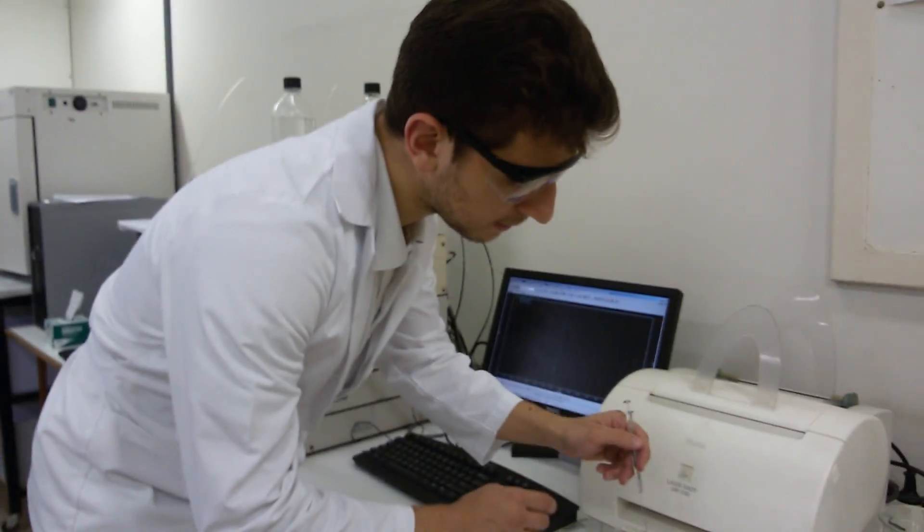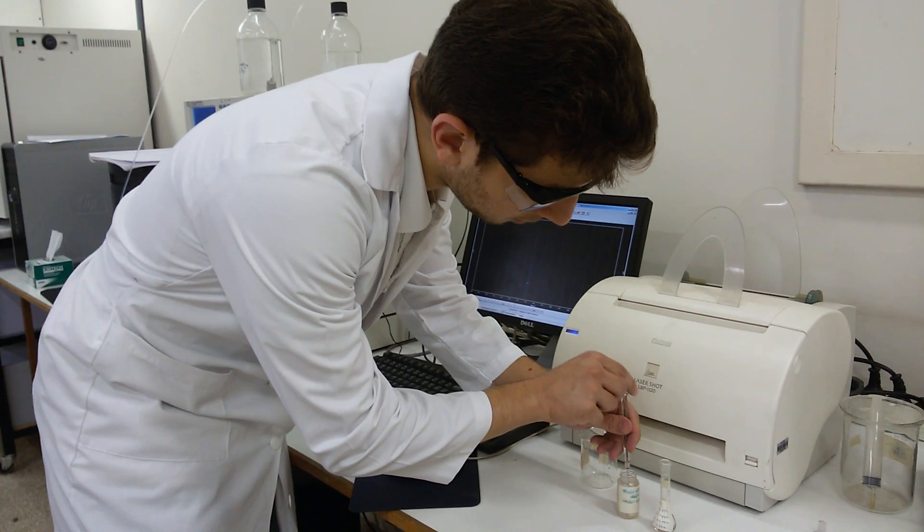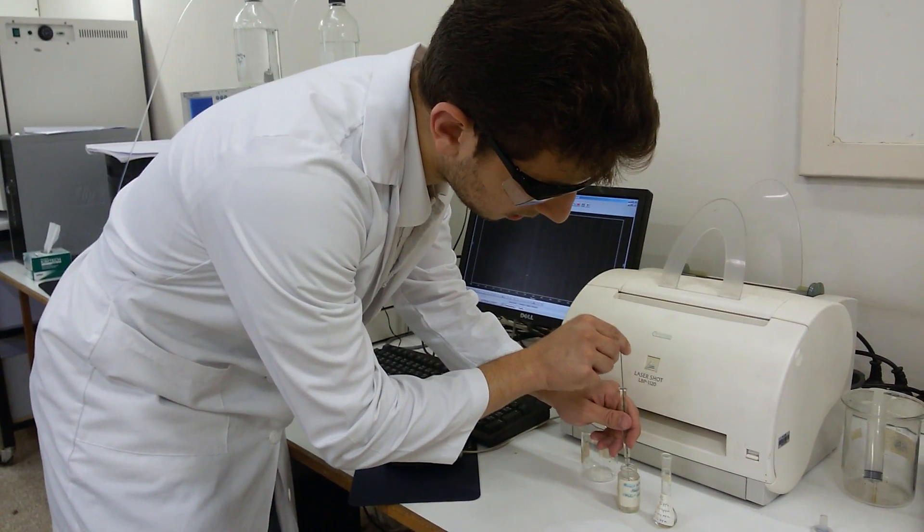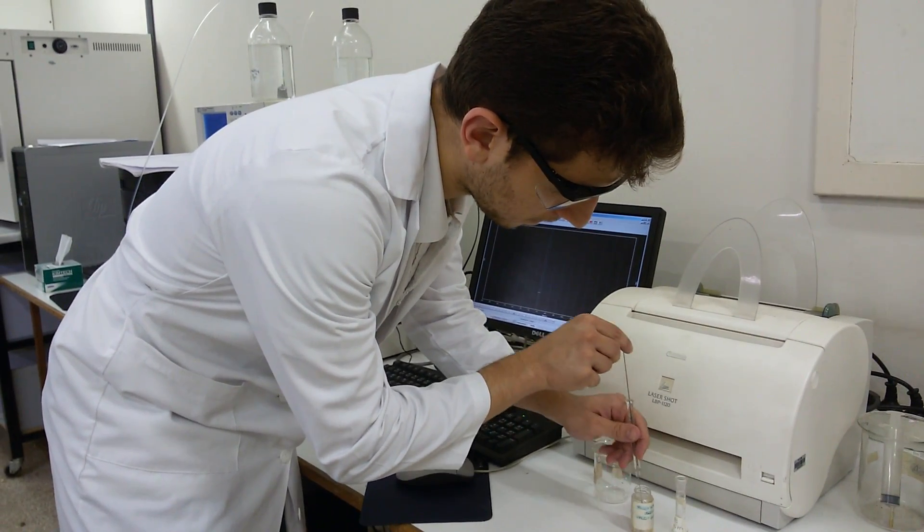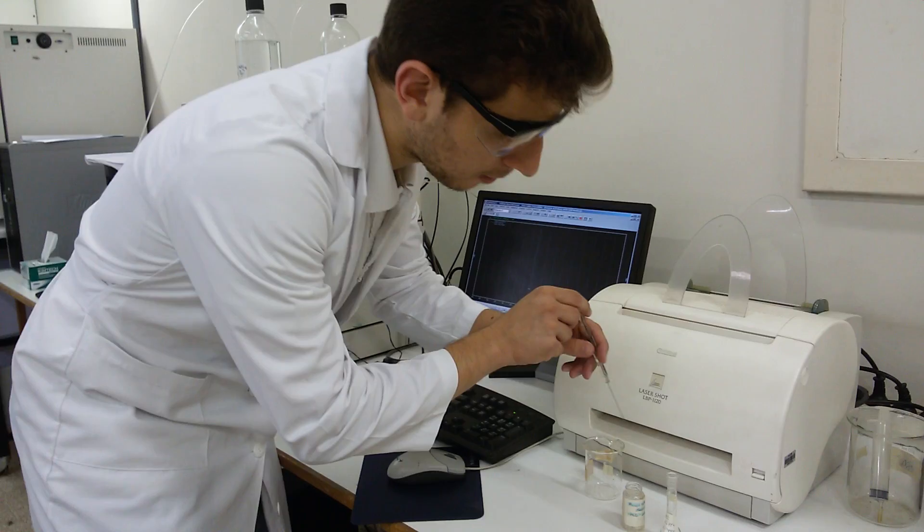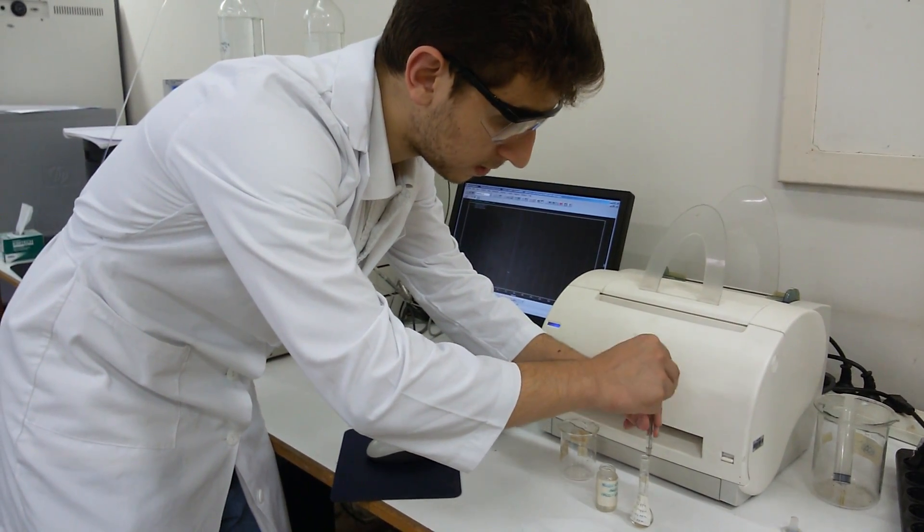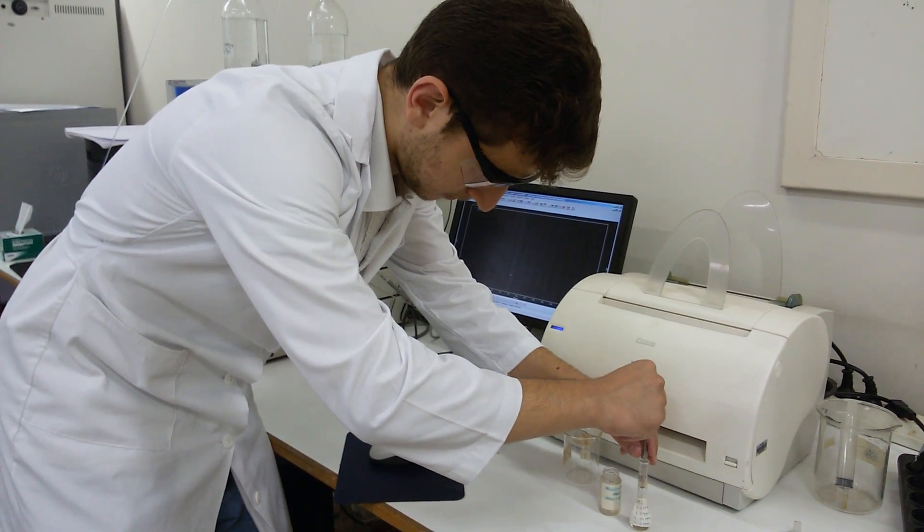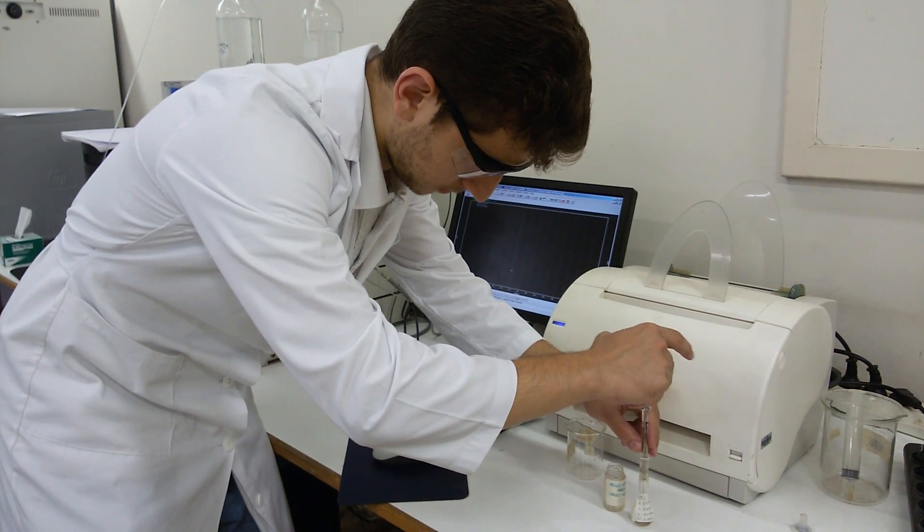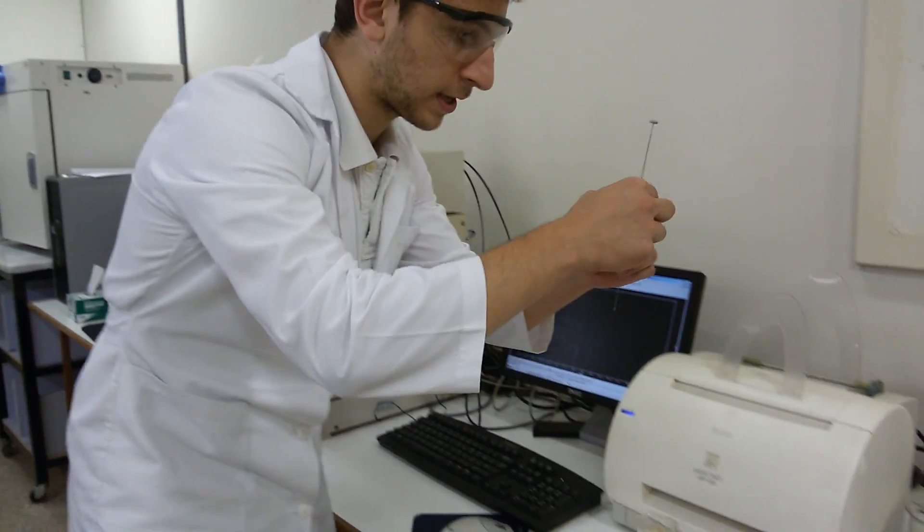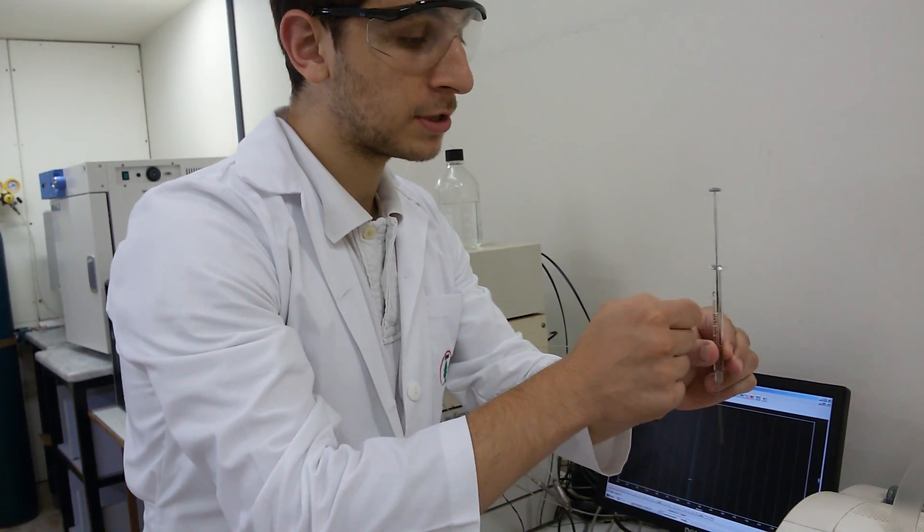First before doing the injection I need to rinse my syringe properly with methanol. Then I need to fill my syringe up to 40 microliters. Okay that's 40 microliters, I want to make sure that there is no bubbles at all inside my syringe.